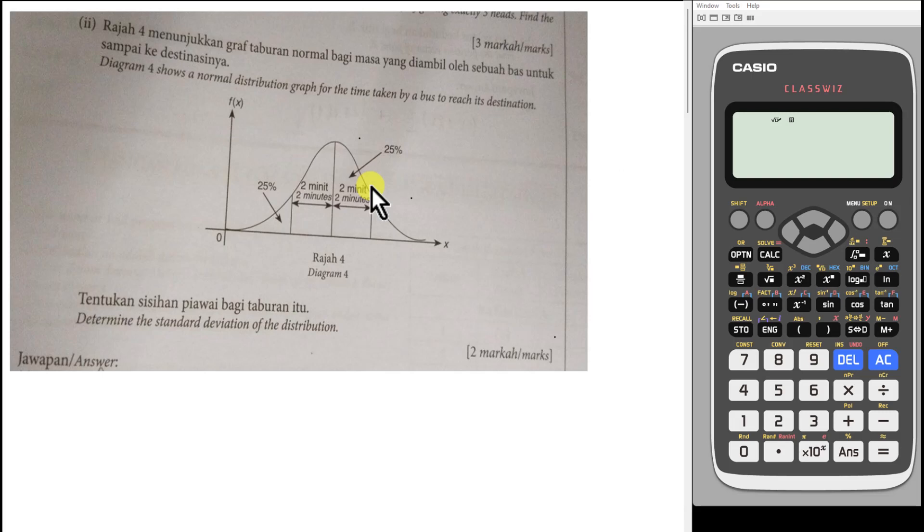All right, let's discuss this question. I find this question actually quite interesting. First is because this question, they actually give very limited information. They say Diagram 4 shows a normal distribution graph for the time taken by a bus to reach its destination.